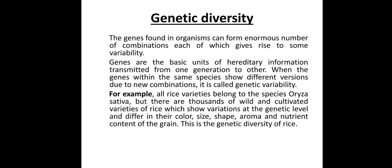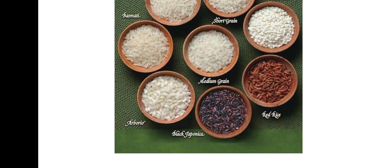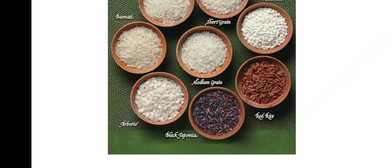All of these belong to one species, that is Oryza sativa. The best examples are different types of rice grains: flaked rice, black rice, red rice — which is enriched in iron content — and there is also nutrient variation. Comparing rice with red rice, the nutrient content is higher. Also, short grain rice, long grain rice, and basmati rice — all these belong to one species, Oryza sativa, but they show genetical variability. So this is the genetic diversity of rice.